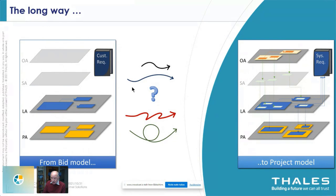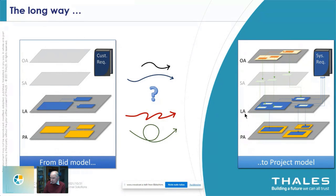The ways were not easy. We struggled with some topics, and there were many questions that needed to be answered during this transfer. For example, what shall we do with the more than 3,000 customer requirements in text form? And which Arcadia levels — operational analysis, system analysis, logical architecture, or physical architecture — shall we select for which purpose in the project?